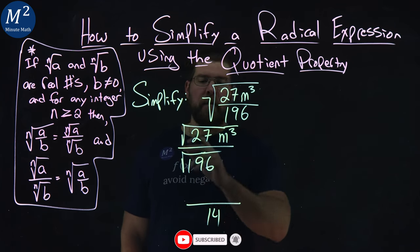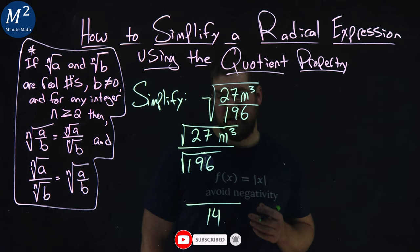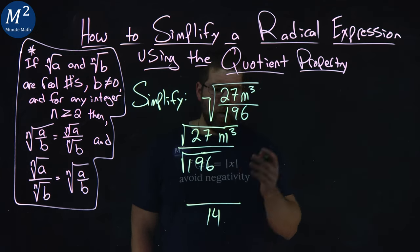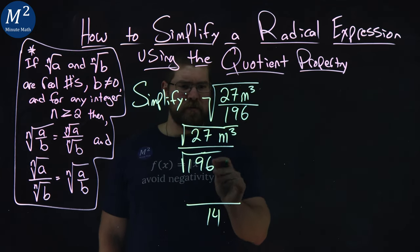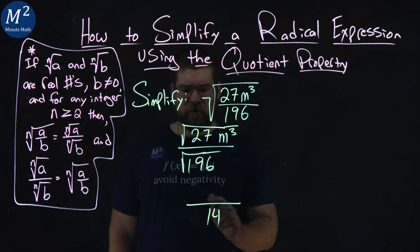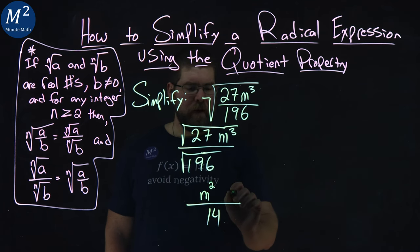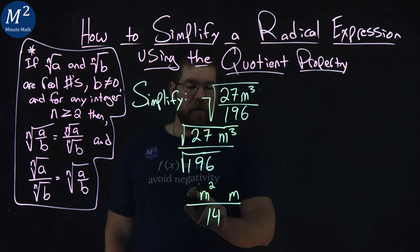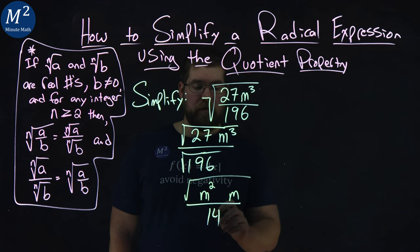There's 14 here and we have the square root of 27 and m to the third power. The m's are easy to separate into two groups of multiplication because we have m squared and then we have an m. We know we can take the square root of m squared and it cancels out.